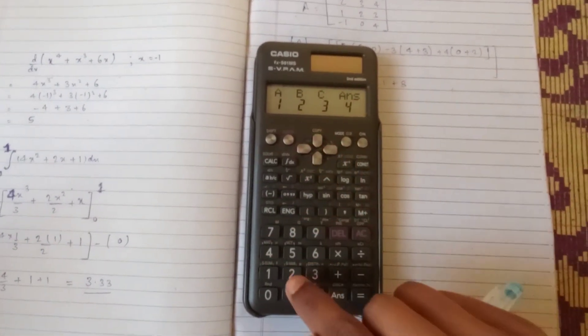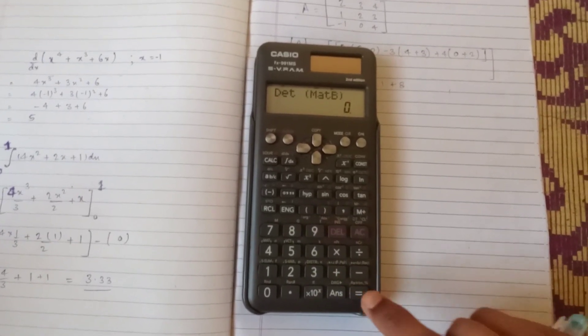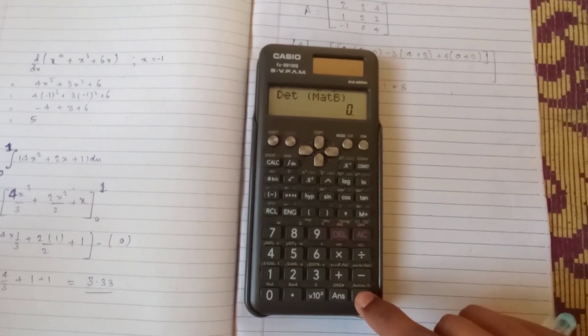So we have to give 2 input and close the bracket. Then you have to just click the equal to and you will be getting the answer.